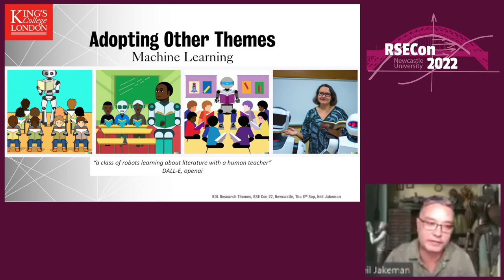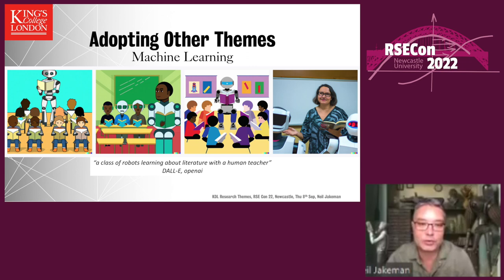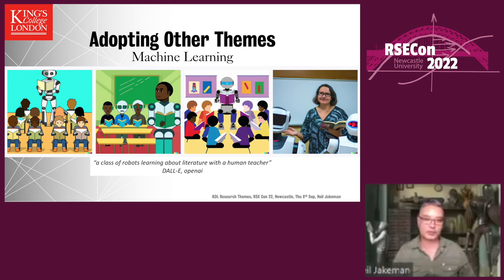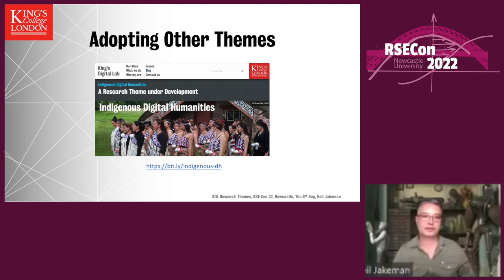Digital creativity was just the start. The next theme we'd like to develop is machine learning — particularly machine learning methods in arts and humanities research — because we've seen an uptick in partner interest, we have relevant skills, and there are initiatives like the King's AI Institute we want to tap into. However, this template lends itself well to techno-centric themes like AI, machine learning, and digital creativity — but what about themes requiring a more reflective approach? My colleague Sam Callahan yesterday published a blog post on the lab's interest in indigenous digital humanities, which I'd encourage you to look at. The next step is to think about how we can make sure that kind of research theme is equally well catered for by the processes we develop.